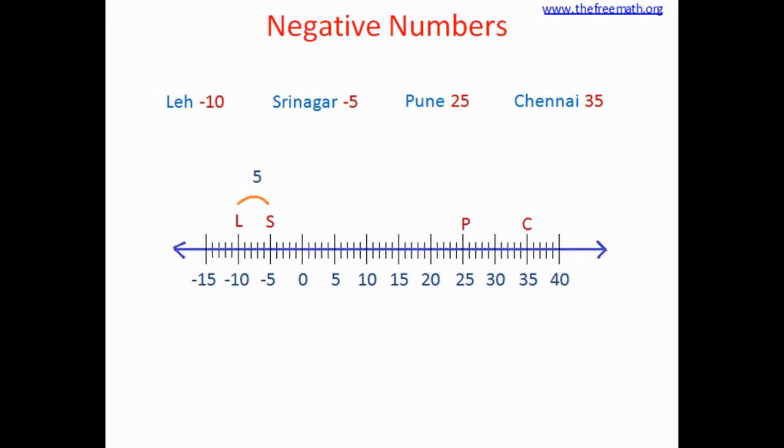Now the difference between Srinagar and Pune: from negative 5 to zero is 5 steps, and from zero to 25 is 25, so the total difference is 30 degrees — Pune's temperature is 30 degrees more than Srinagar's. The difference between Pune and Chennai is 10 degrees. Whenever you are comparing negative numbers or unsure of their value, draw a number line or visualize it.